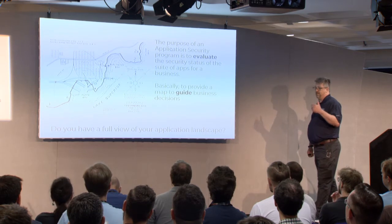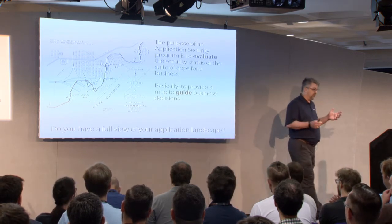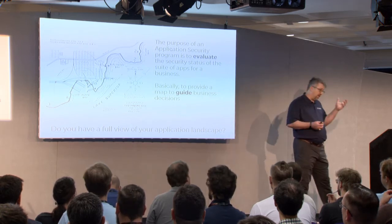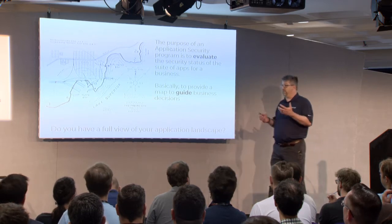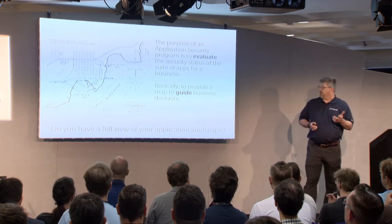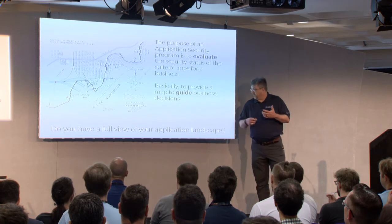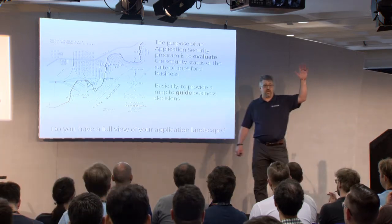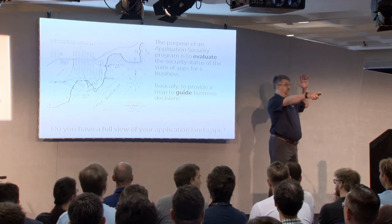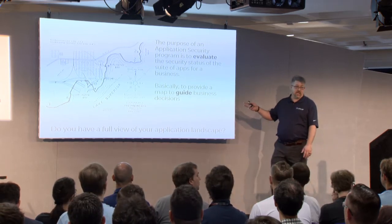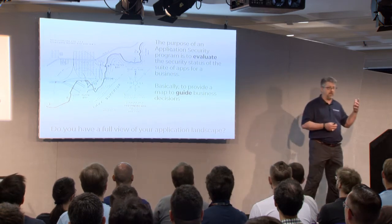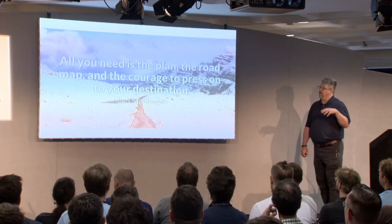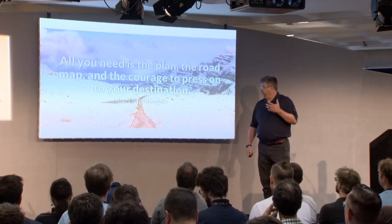The purpose of an AppSec security program is to evaluate the security of the suite of apps your company has, and give the business the status — this is the state of security of this app. The business can say we're okay with this, or we want to fix that. You're supposed to give them a roadmap of how secure or insecure their suite of applications are and provide a guide for business decisions. Most people have no clue about their entire suite of apps — there's too much going on, too fast, too many random things popping up. You've got to be as dynamic as your business. Hopefully the AppSec pipeline is that roadmap.